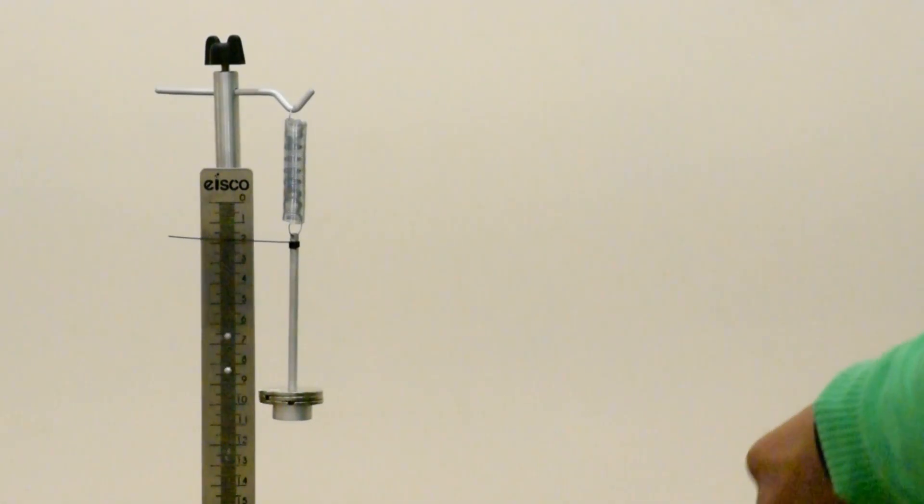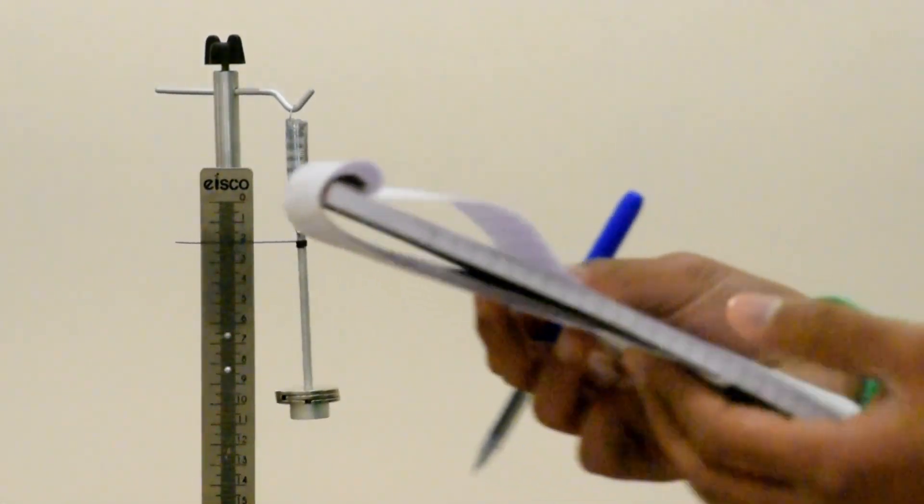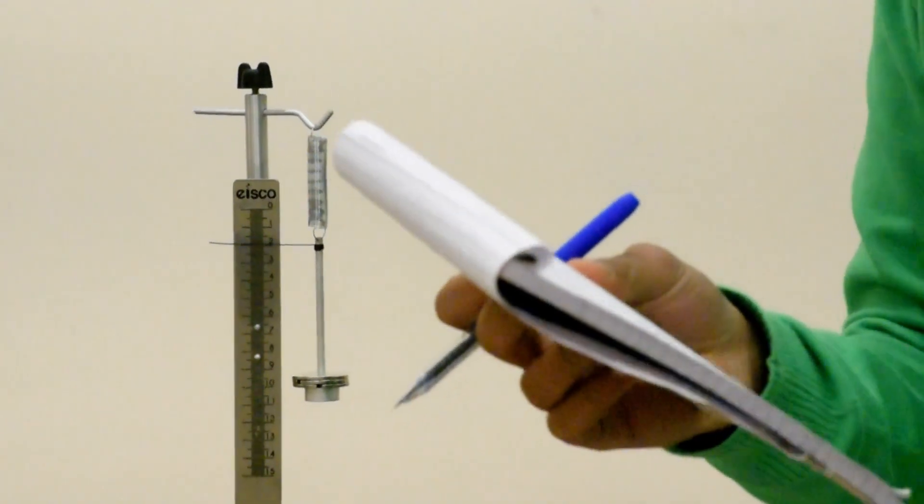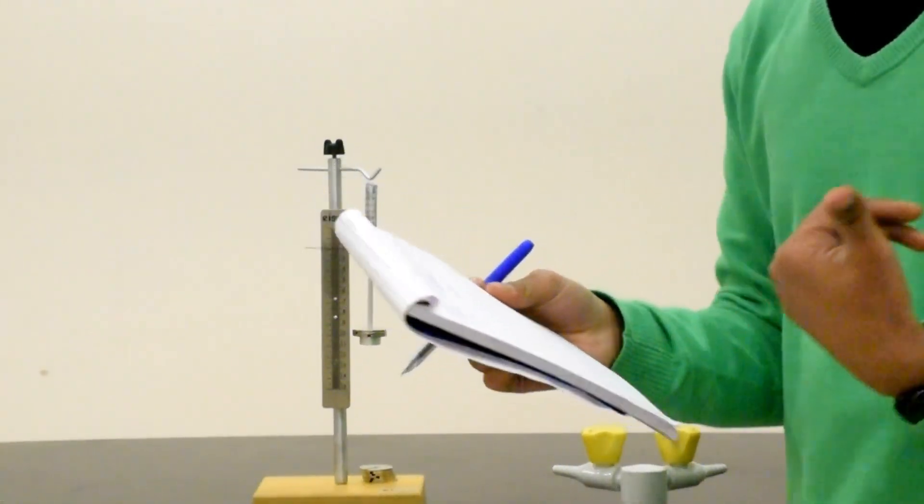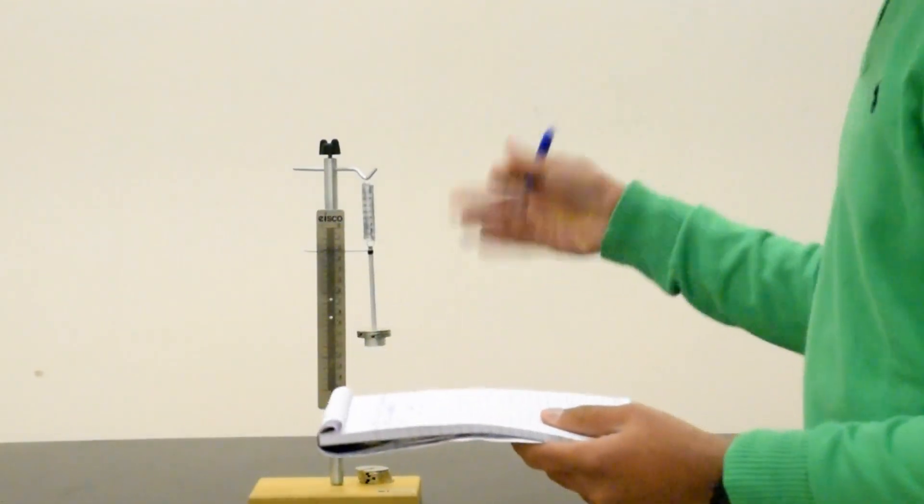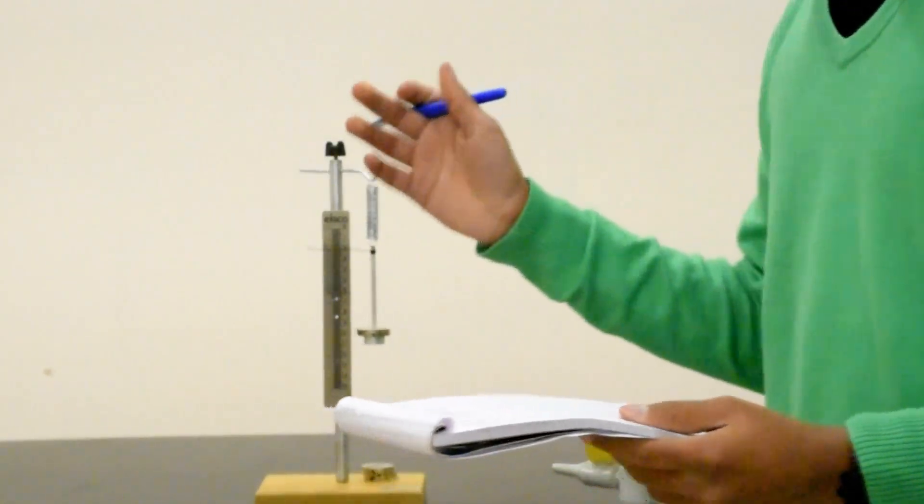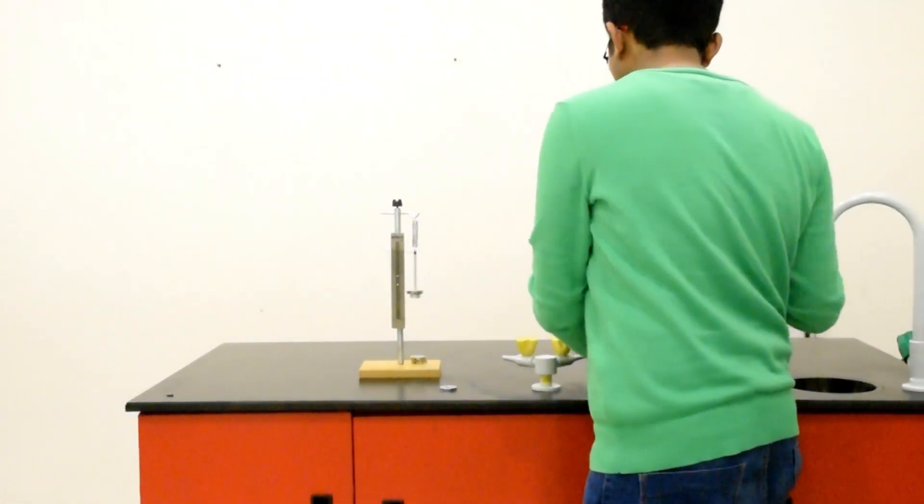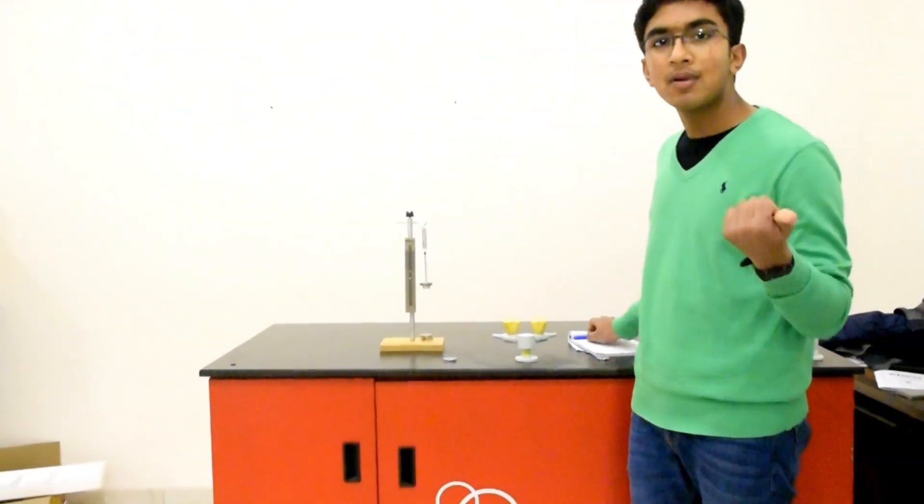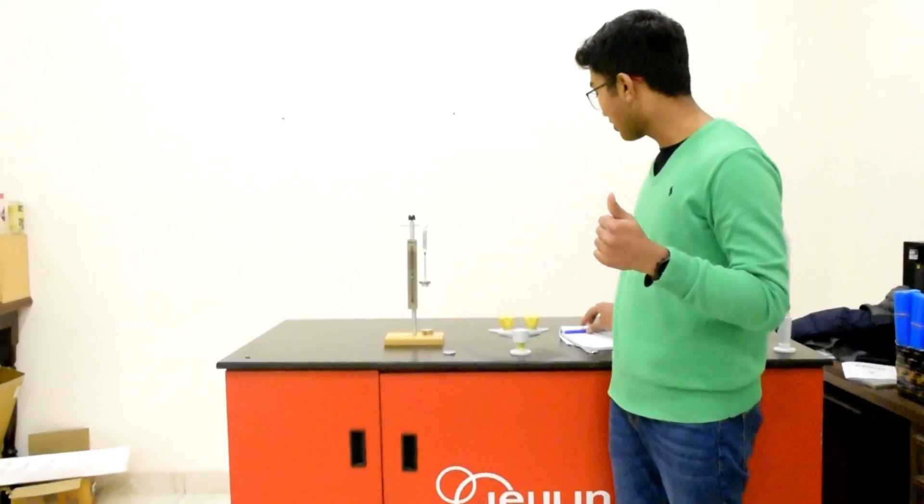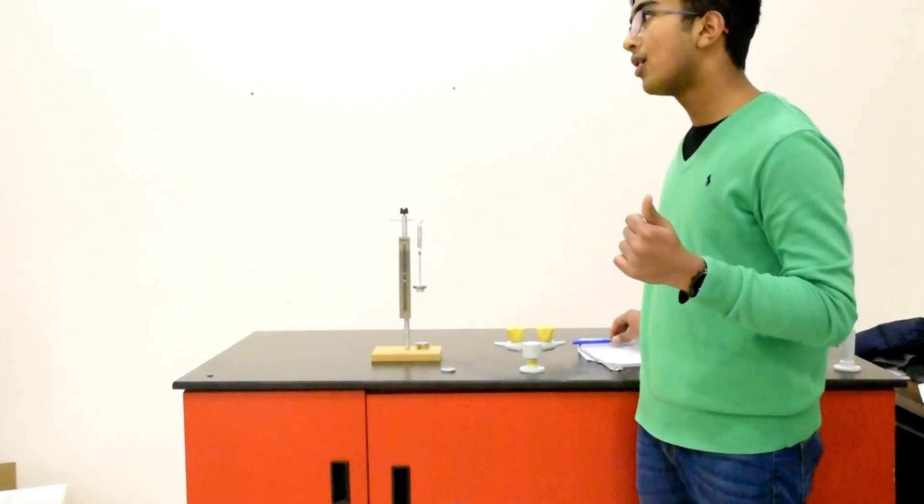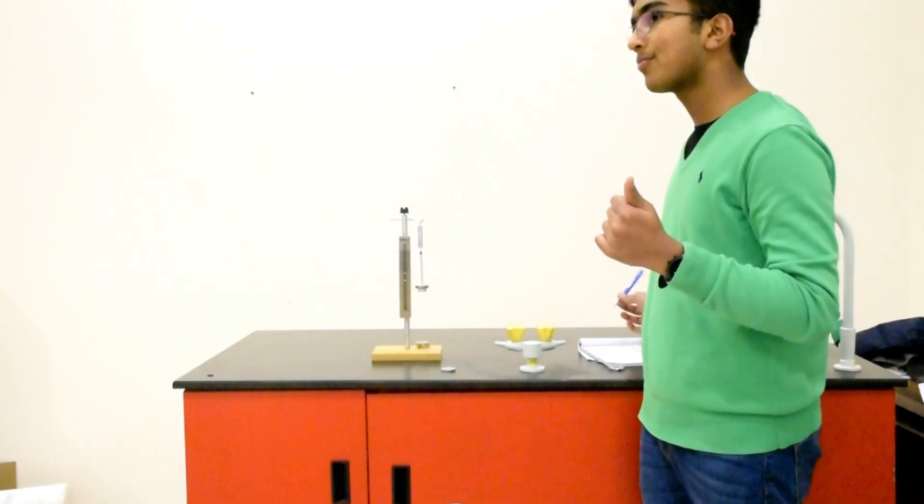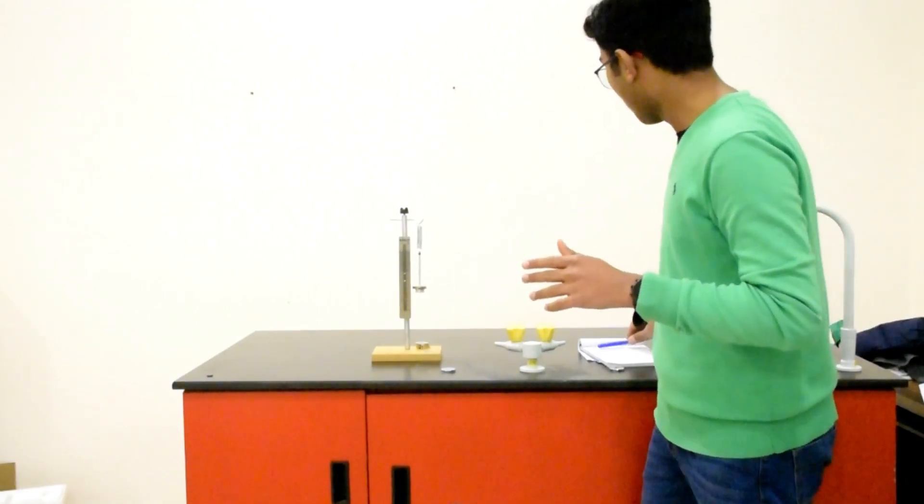Now I'm going to report the results in a table where I have three columns. The first one is force in newtons. The second one is extension in centimeters which we'll get from the scale. And the third one is extension in meters. Hooke's Law was devised in meters and its units are newtons per meter. So we're going to work with that.